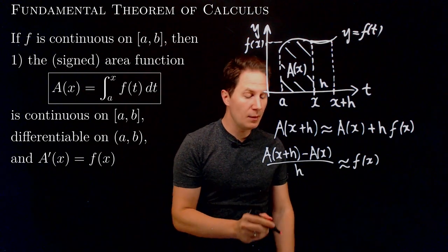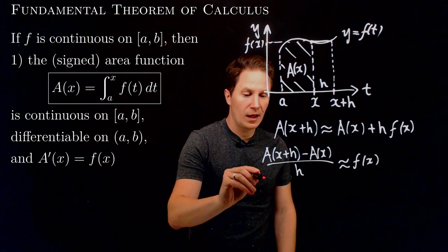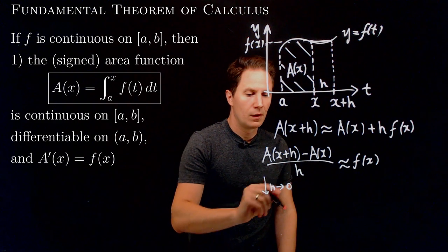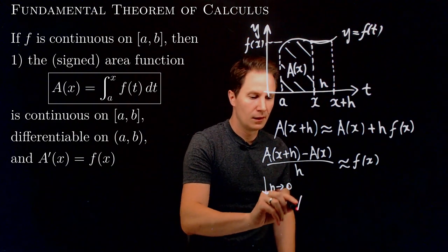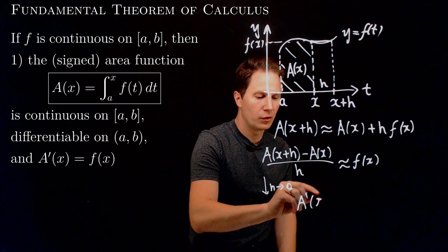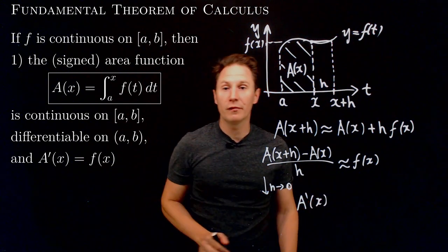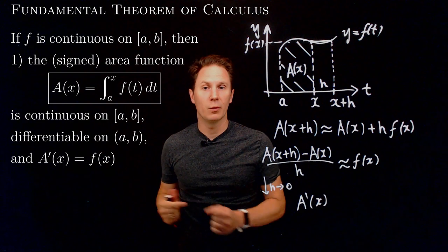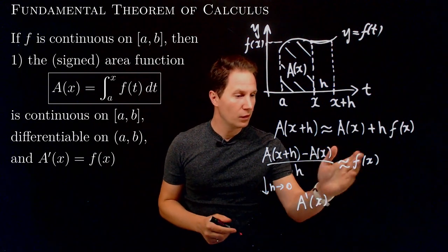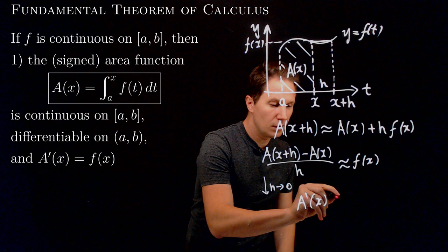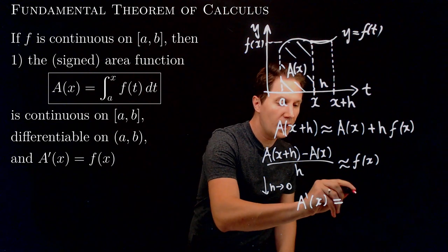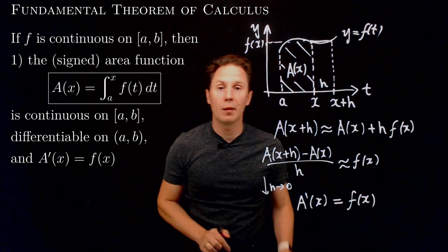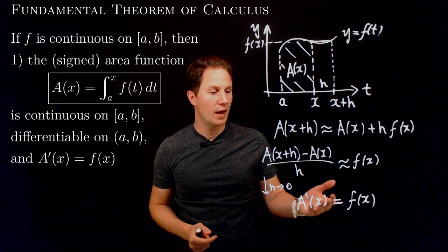When we take the limit as h goes to zero, we get on the left-hand side A prime of x. And what the fundamental theorem of calculus says — Part 1 — is that this approximation in the limit becomes an exact equality: A prime of x equals f of x.